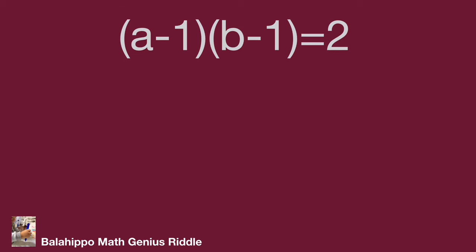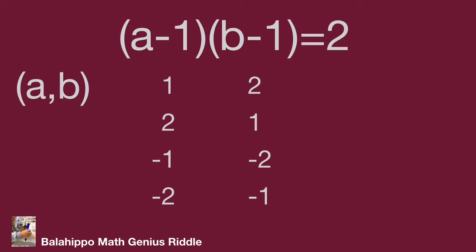Since a and b are integers, to fulfill (a-1)(b-1) = 2, the factor pairs are: (a-1)=1 and (b-1)=2, or (a-1)=2 and (b-1)=1, or negative pairs (-1)×(-2) and (-2)×(-1). So the number groups for (a, b) from this first case are: (a=2, b=3), (a=3, b=2), (a=0, b=-1), or (a=-1, b=0).